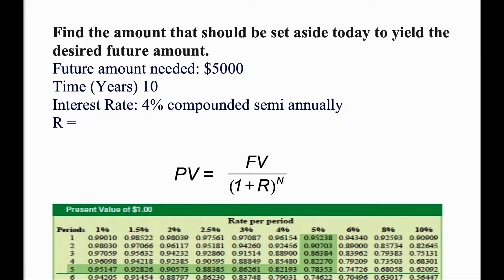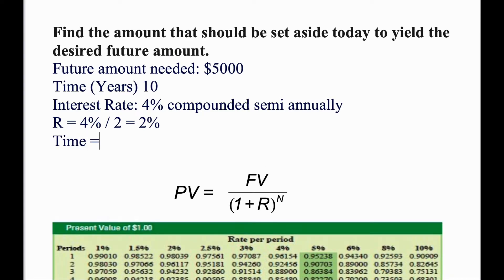So rate is 4% compounded semi-annually, meaning twice a year. Therefore, instead of using 4%, you will use 4% divided by 2 equals to 2% per period. And for time, you will use 10 multiplied by 2 equals to 20. The reason we use 20 is because the amount is going to be compounded two times a year.